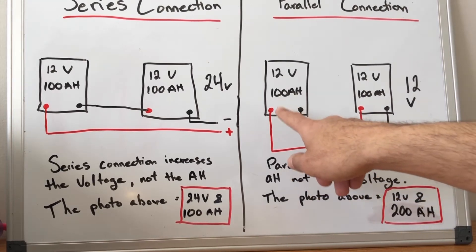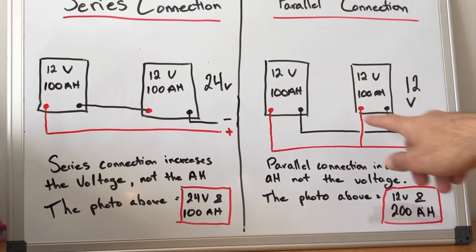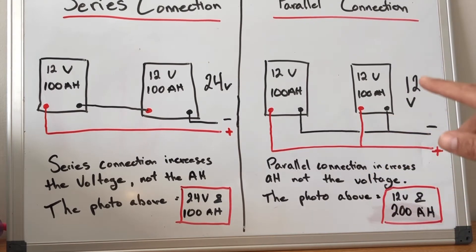So you would run a positive to connect to the other positive and then out and a negative from the first battery into the second battery and out. So you've gone to 200 amp hour 12 volt system.